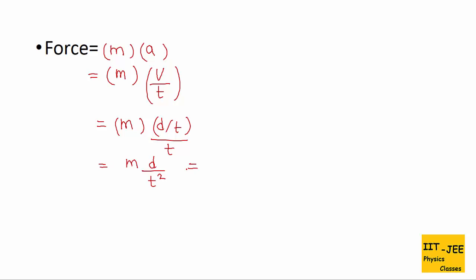Now plug in all the dimensions: for mass it is M, for D it is L, and for T it is T². When T goes to the top, its power is negative, giving M L T⁻². When we enclose this in square brackets, it becomes the dimensional formula of force.